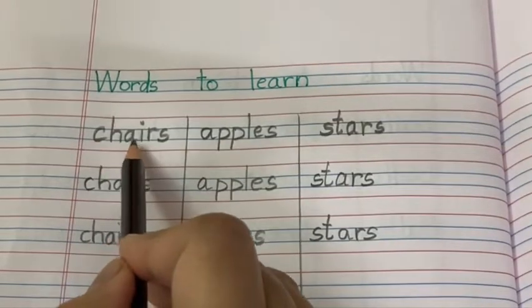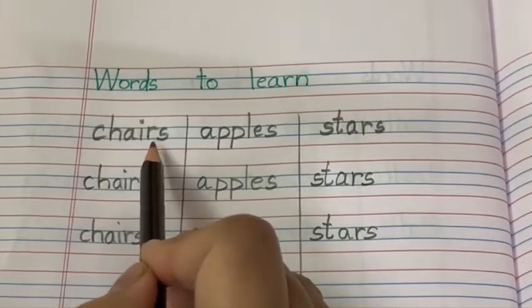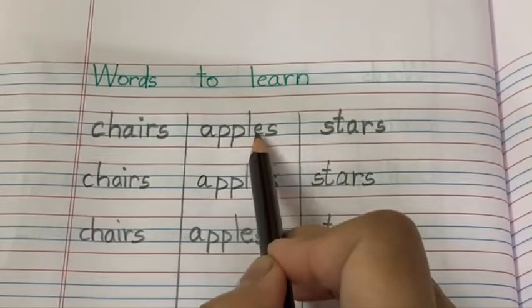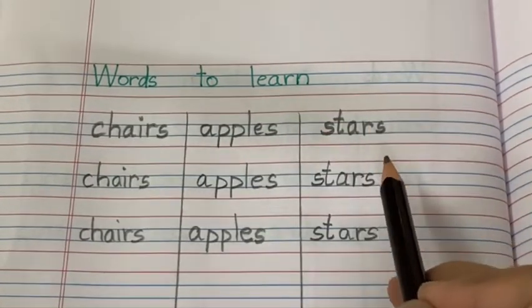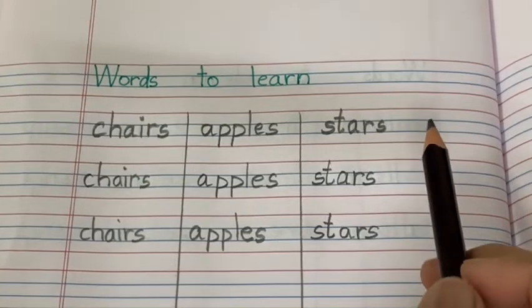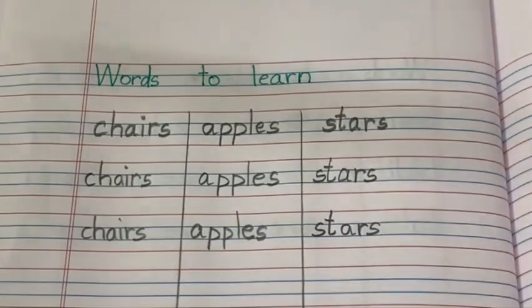Now, come on. C, H, A, I, R, S. Chairs. A, P, P, L, E, S. Apples. S, T, A, R, S. Stars. Okay, children. Practice well. Take care. Bye-bye.